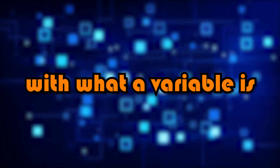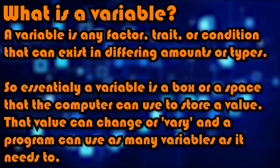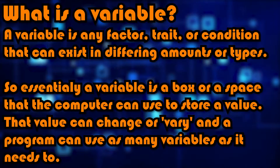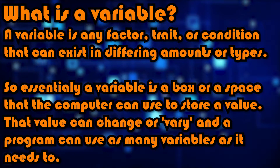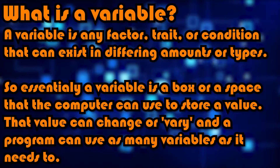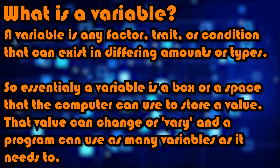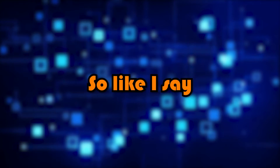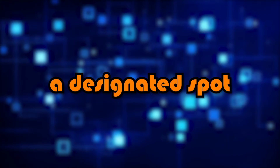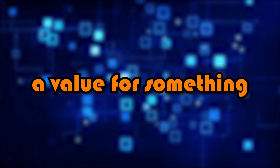So without further ado, let's first start off with what a variable is. A variable is any factor, trait, or condition that can exist in differing amounts or types. Essentially, a variable is a box or a space that the computer can use to store a value, and that value can change or vary. A program can use as many variables as it needs to — it's just a designated spot that the code or game engine can go to and use to find a value for something.